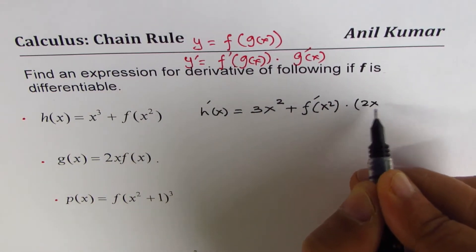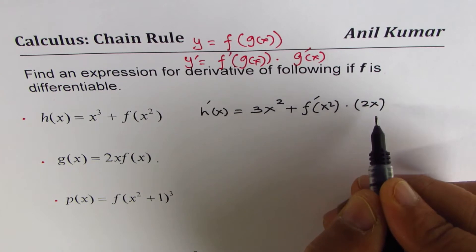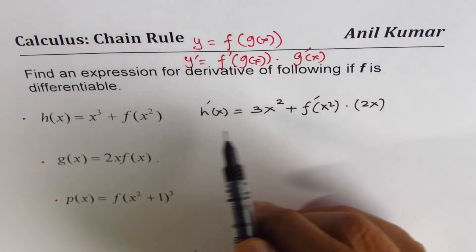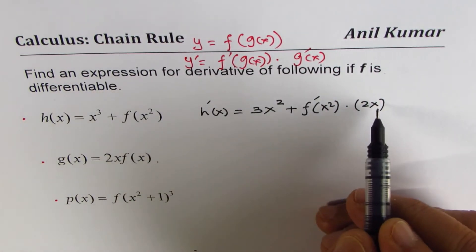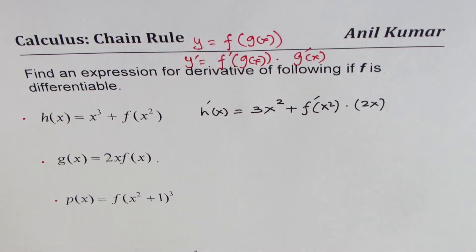times the derivative of the inside function. The inside derivative is 2x, so I'll straight away write 2x. You could add a step here like derivative d/dx of x squared, and then come to this result. However, this is going to be your answer.